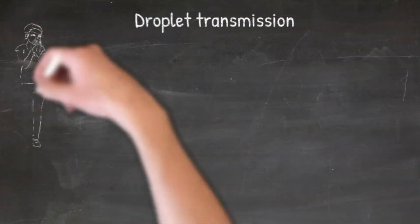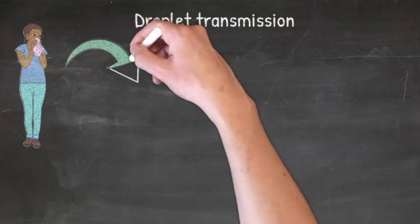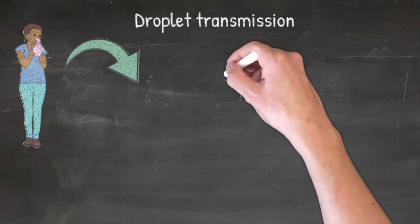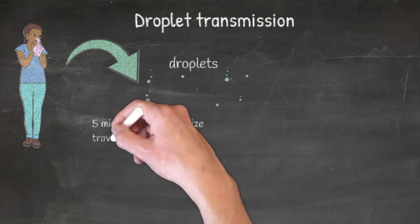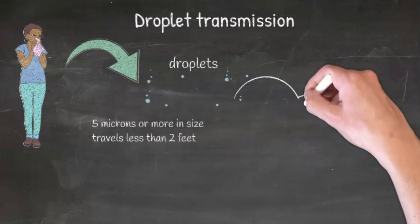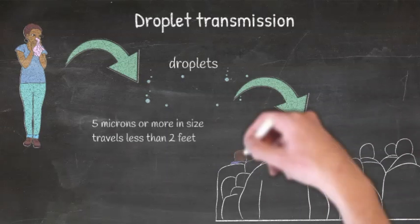Droplet infection can be either direct or indirect. The direct way of infecting somebody through droplet infection is when somebody is in close vicinity of somebody else and you cough or sneeze on them. These droplets are tiny, around five microns in size or larger, and they contain millions of virus particles that can infect somebody through ports of entry such as your nose, eyes, and mouth.